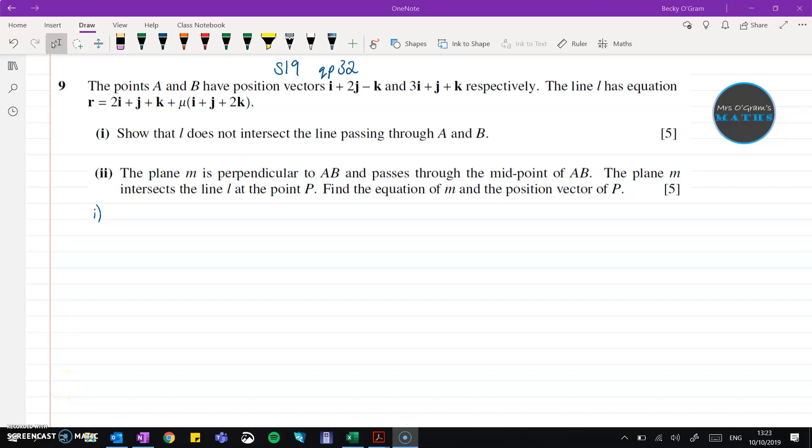Back to Mrs McGram's Maths. We're doing another vectors question from the exam series in 2019, from the summer paper, question paper 32 for the P3 exam. Have a pause, read the question, and I will carry straight on. Right, so we want to show that l does not intersect the line passing through A and B.